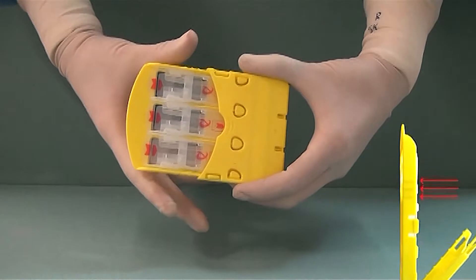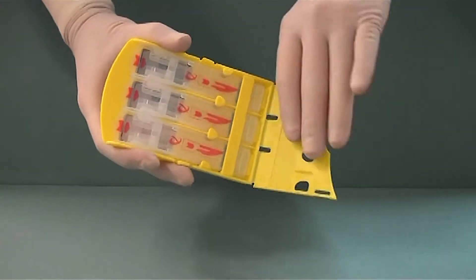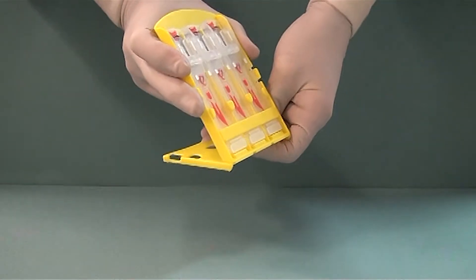Squeeze the three grip ridges on the side to release the cover. Fold cover back and lock in place.